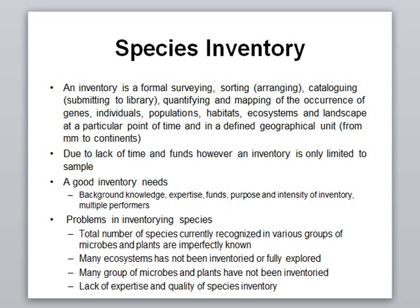Many groups of microbes and plants have not yet been inventoried — we have not even started the inventory of certain plants. Additionally, lack of expertise and poor quality of species inventory is also a significant problem, because if there is no quality, there will be question marks over all the inventories that have already been done.